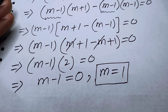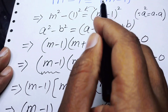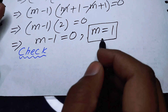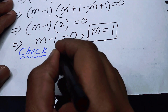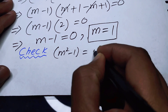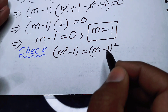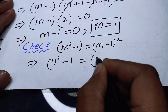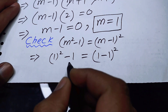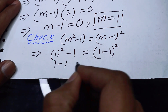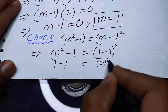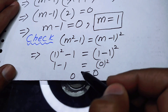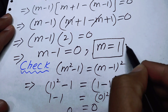Now we check our answer by substituting the value of m back into the given expression. Our given statement is m squared minus one equals m minus one whole square. Substituting m equals one, we get one squared minus one equals one minus one whole square. One squared is one, and one minus one is zero, so zero equals zero squared, which is zero. Our answer m equals one satisfies the given expression.